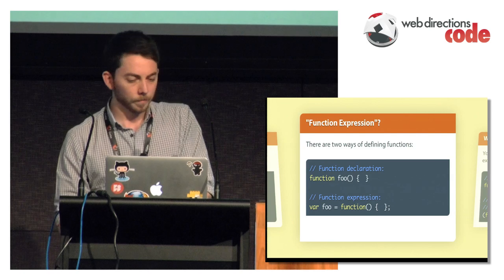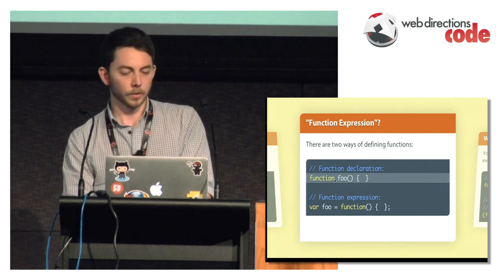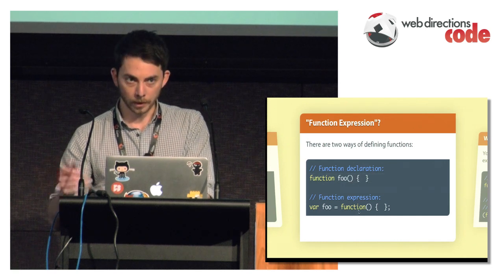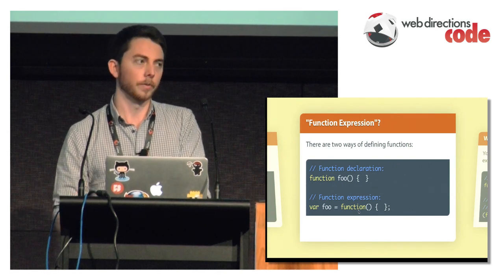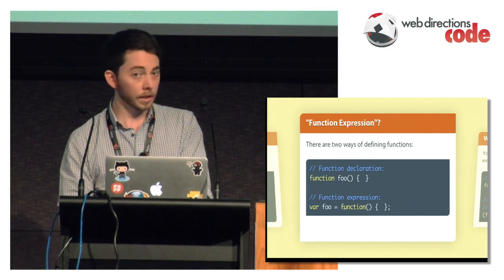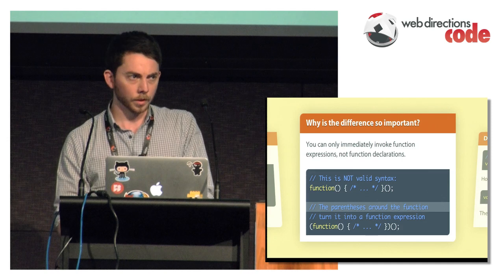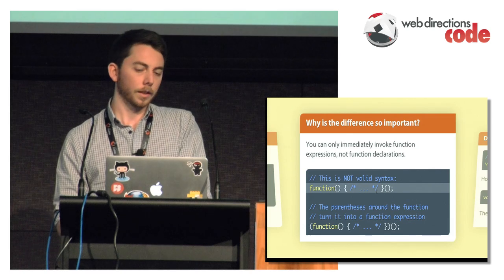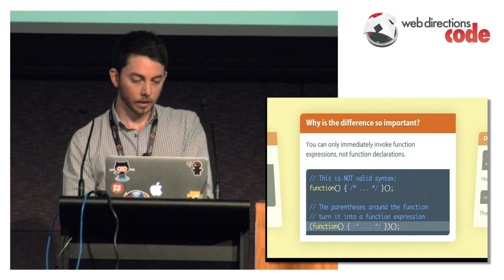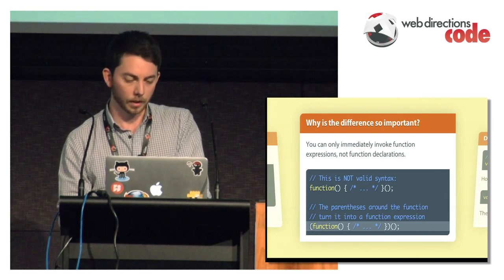What is a function expression? There are two ways of defining functions in JavaScript. The first is the one you learn on day one: function foo with your function body. The other way, which you discover a bit later, is when you really start to understand the first-class nature of functions in JavaScript, where they can be passed around like variables. Here's an example of creating an anonymous function and assigning it to foo — that's a function expression. You can't immediately invoke a function declaration, so that's not valid syntax. However, wrapping it in parentheses is valid, because that causes the parser to treat it not as a function declaration but as an expression.